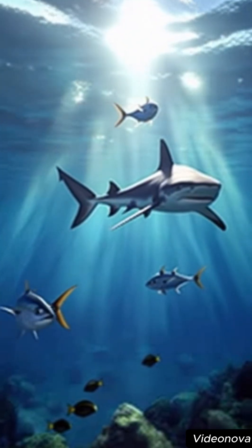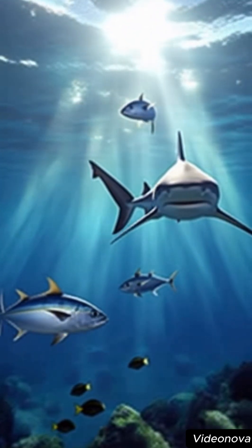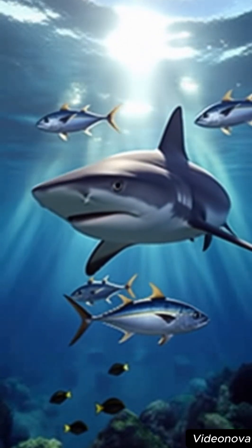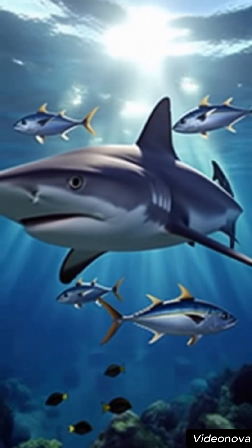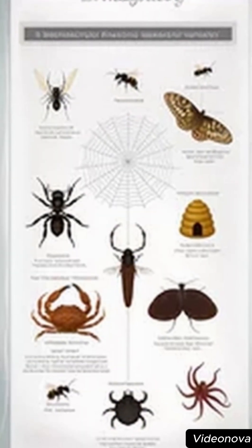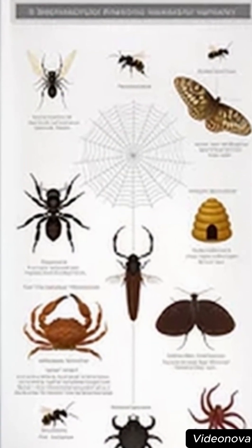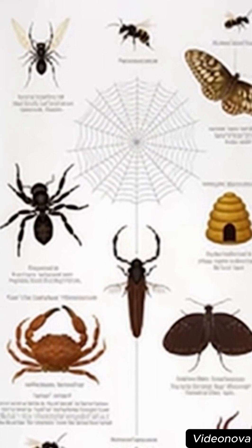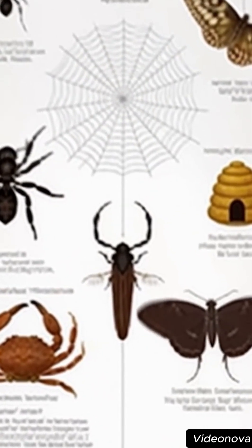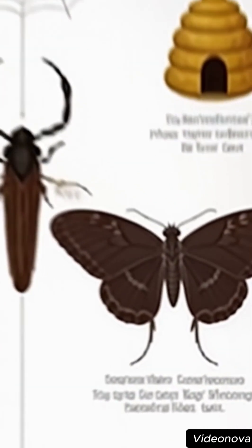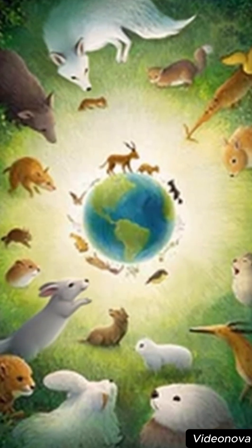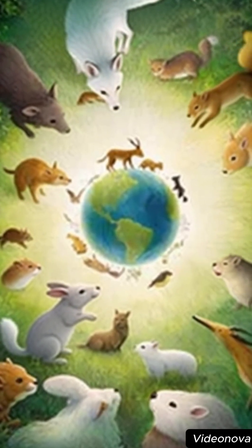But modern classification goes even further. With DNA, researchers can now compare species with incredible precision, discover hidden connections, and sometimes rewrite the tree of life. Classifying animals means telling the story of our planet — understanding where species come from, how they evolved, and how every form of life is, in one way or another, connected. So next time you see an animal, from the tiniest insect to the largest mammal, remember it has its own place in a vast family.